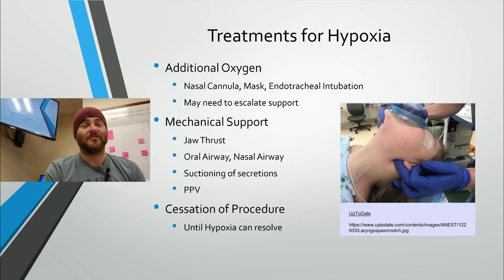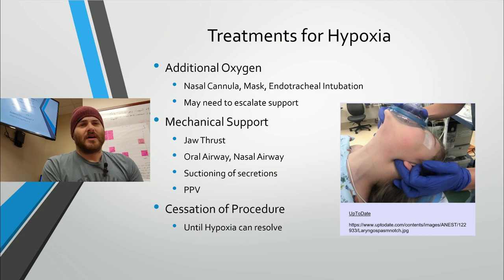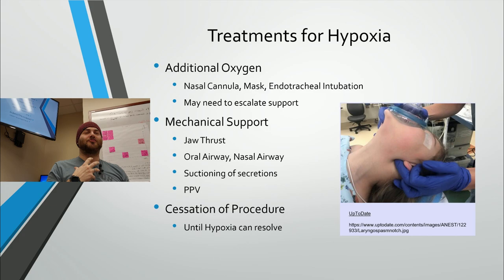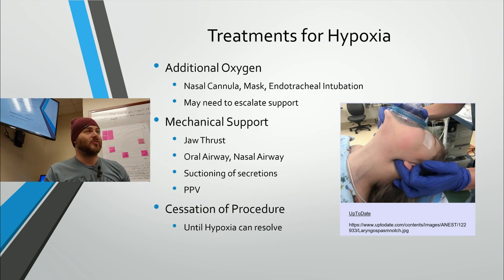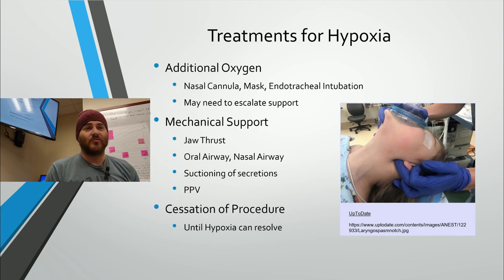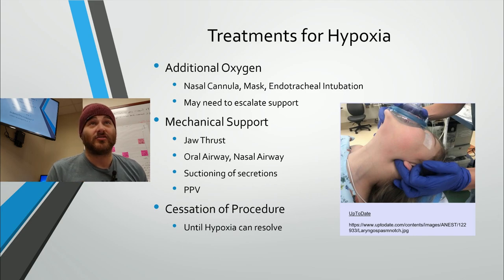If the mouth is in use for an EGD scope, you can't place an oral airway, but jaw thrust can accomplish similar results. Nasal airways are appropriate as well, though they can cause nosebleeds which amplify the problem. Suctioning secretions is also important — secretions, lube, or anything around the vocal cords can stimulate laryngospasm, so remove whatever is in the airway to allow better oxygen passage.